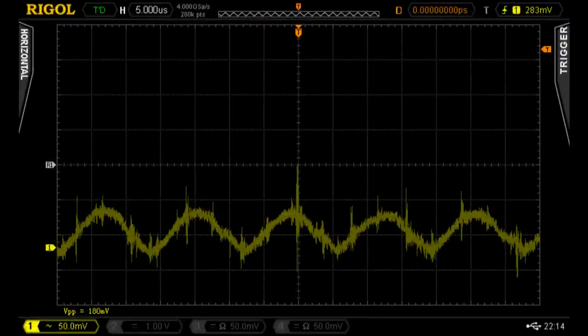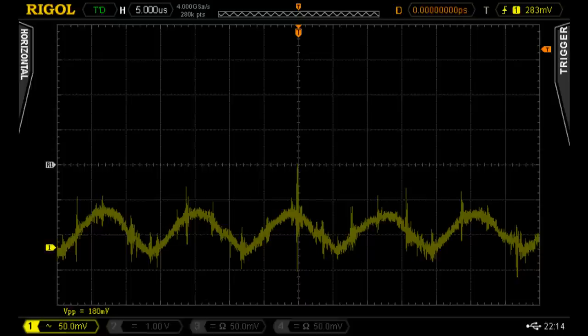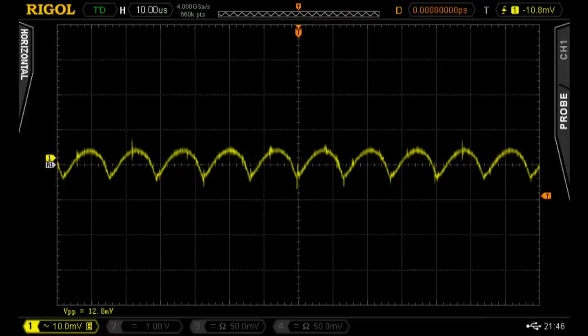So, we use bandwidth limiting to reduce the high frequency response of the scope. In this example, the two traces show the effect of bandwidth limiting. We've limited it to 20 megs. This is a signal without bandwidth limitation and this is with it. Quite a difference, I think you'll agree.